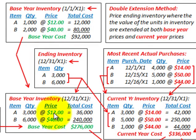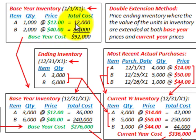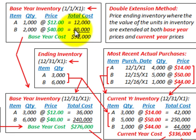To determine the base year cost, we look at the base year inventory on 1/1/X1. We had a quantity of 1,000 of Item A at $12.00 each — that is the base year price for Item A. For Item B, the base year unit price is $40.00. So Item A: 1,000 units at $12 = $12,000. Item B: 2,000 units at $40 = $80,000. Our total base year cost is $92,000.